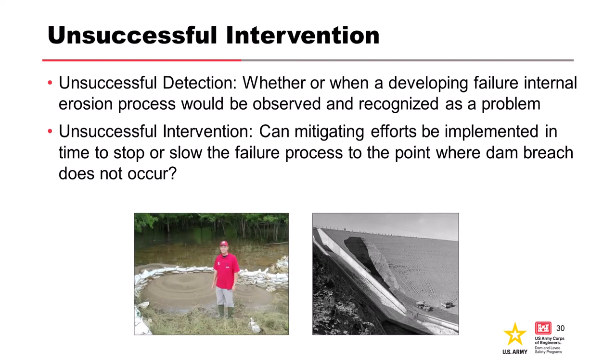Something else to consider is unsuccessful intervention — the likelihood that human efforts to detect and stop or slow the internal erosion process fail to work. Intervention can occur at any time or at any location in the sequence of events. Typically it's considered after progression since unsuccessful detection or intervention leads to breach. We are pretty good at this as an organization — being out there on the flood fight, ringing sand boils, placing sandbags on the crest. We can mobilize people to actually decrease the likelihood of failure, and we want to account for that in our risk assessment.